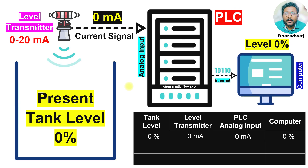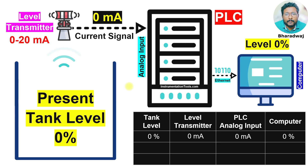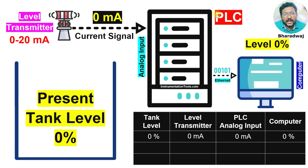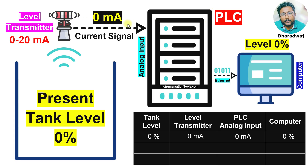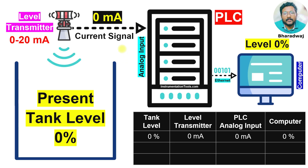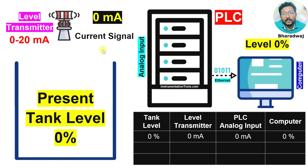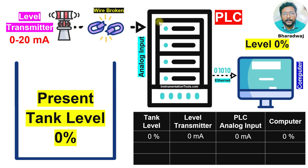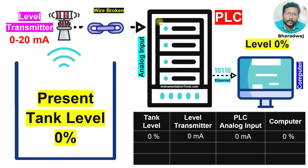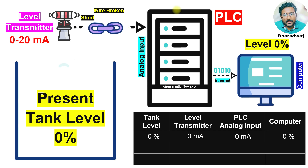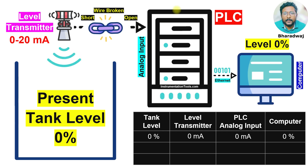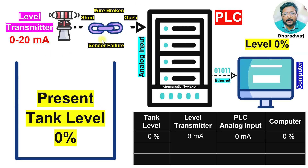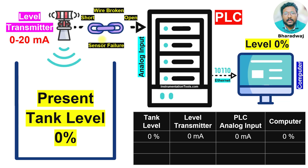Now, let's say due to some reason the wire between the transmitter and the PLC is damaged or broken. There may be a short circuit, an open circuit, or a sensor failure — the level sensor itself may have failed. Some damage has occurred.